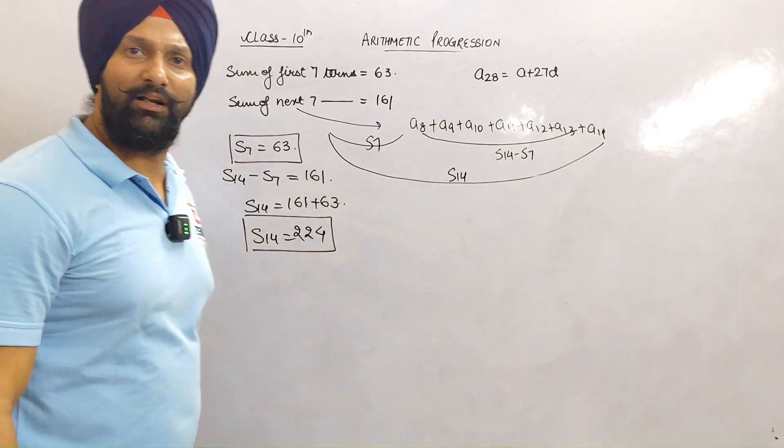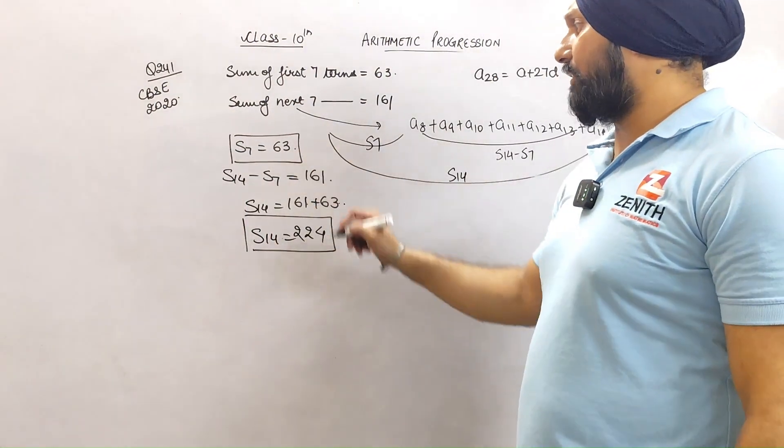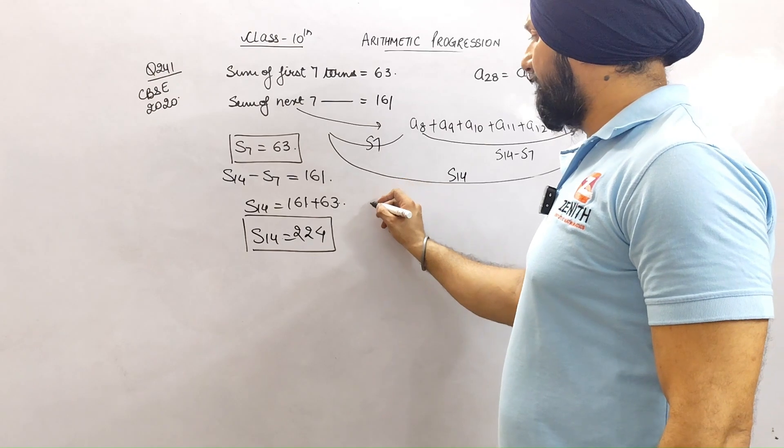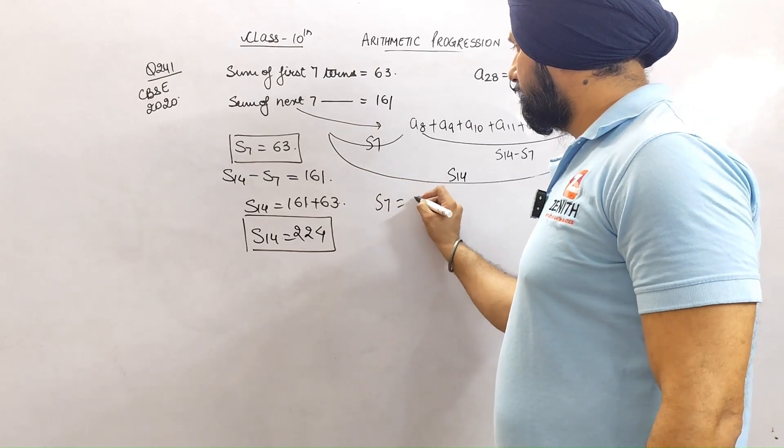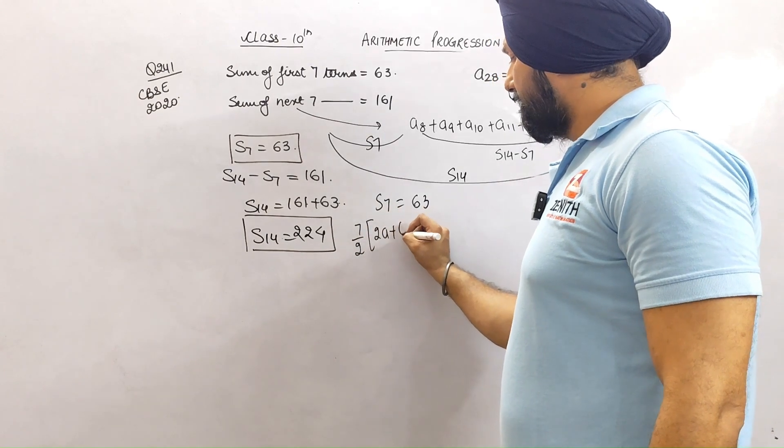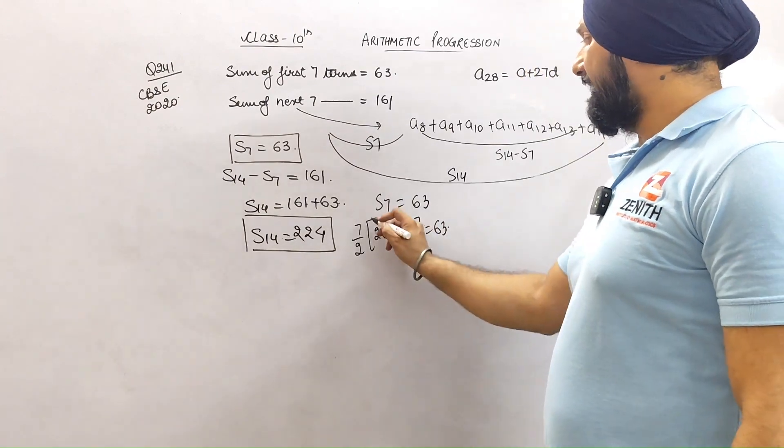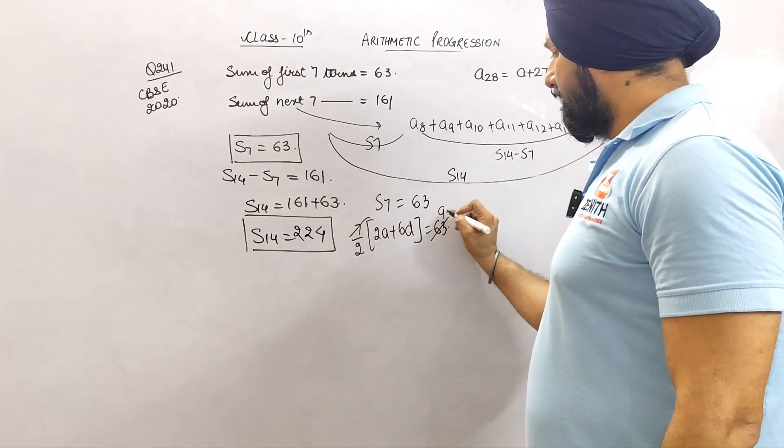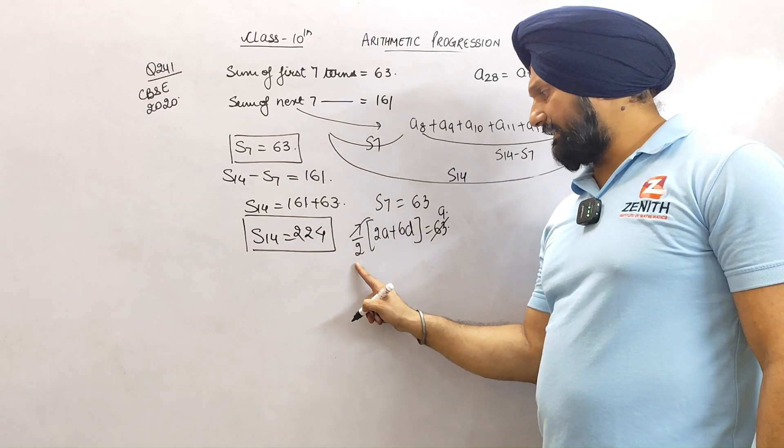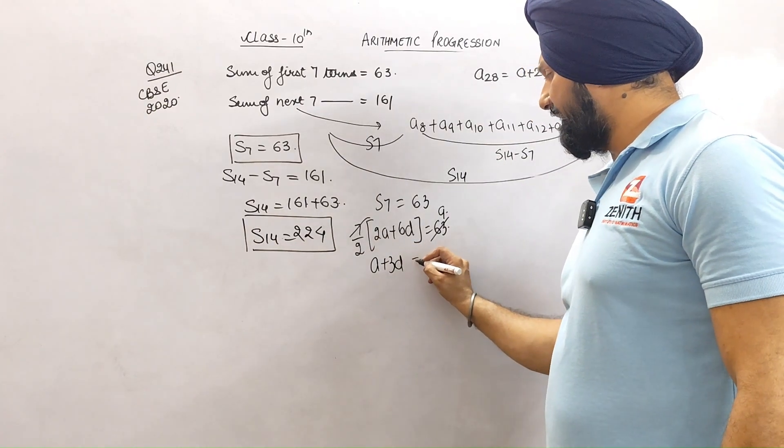Now will this become a regular question or not? Let's expand S7. What does S7 mean? 7/2 times (2a + 6d), yes or no? Seven by two, take two common, cancel with 2. So 7(a + 3d) = 63, which means a + 3d = 9.